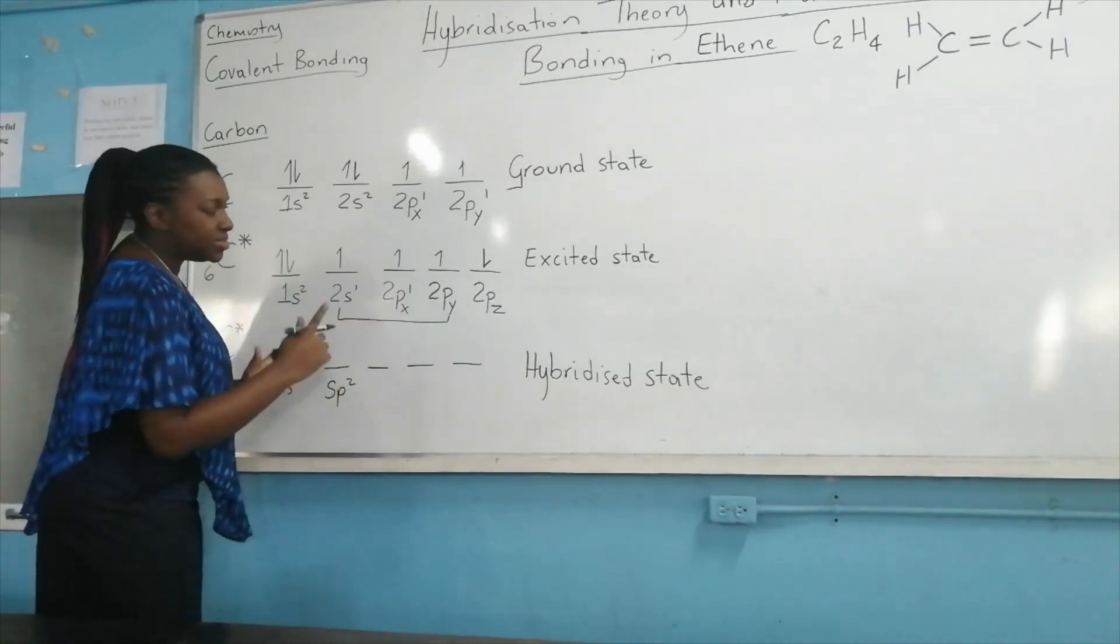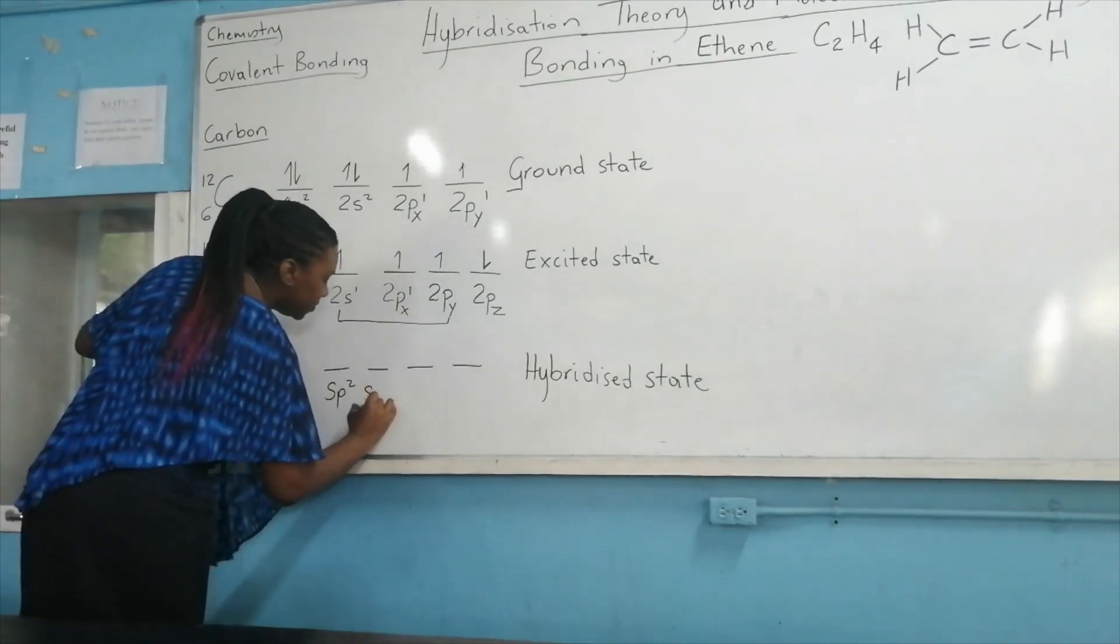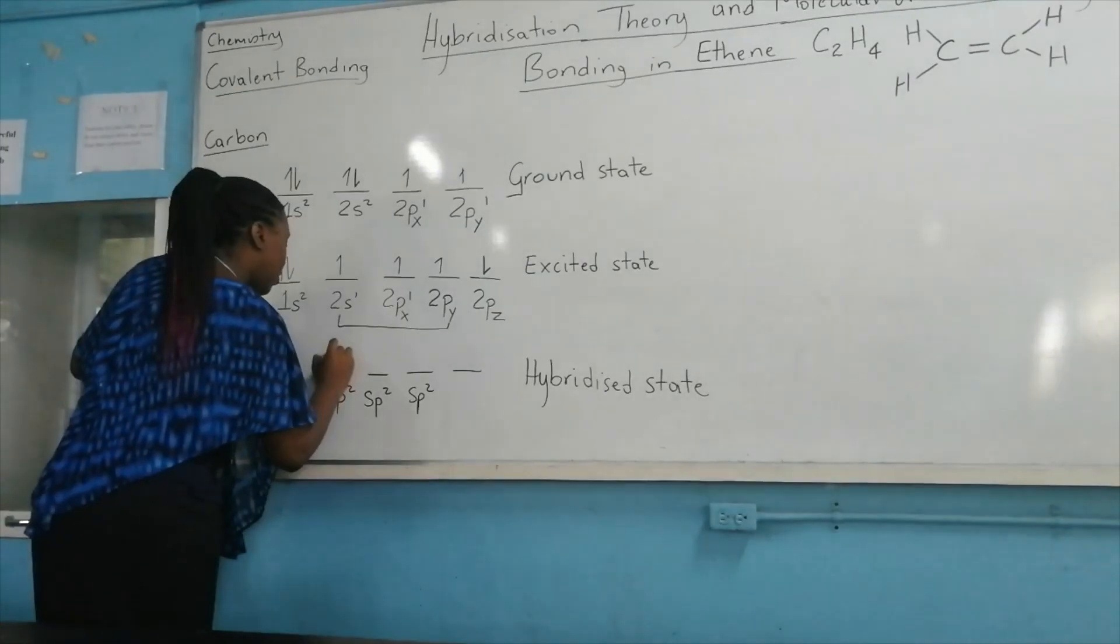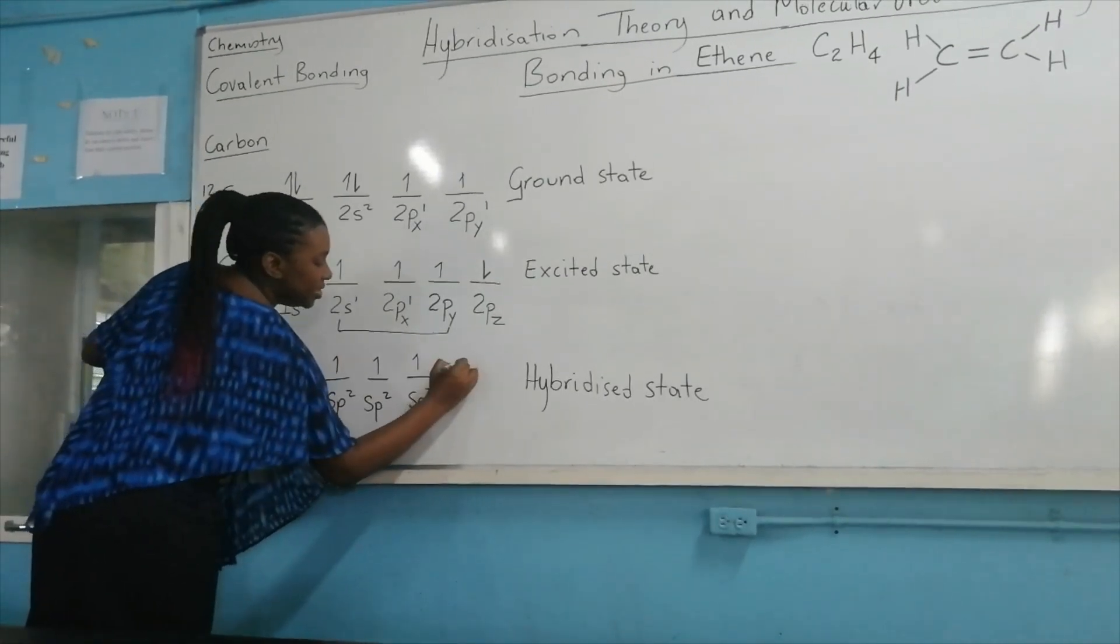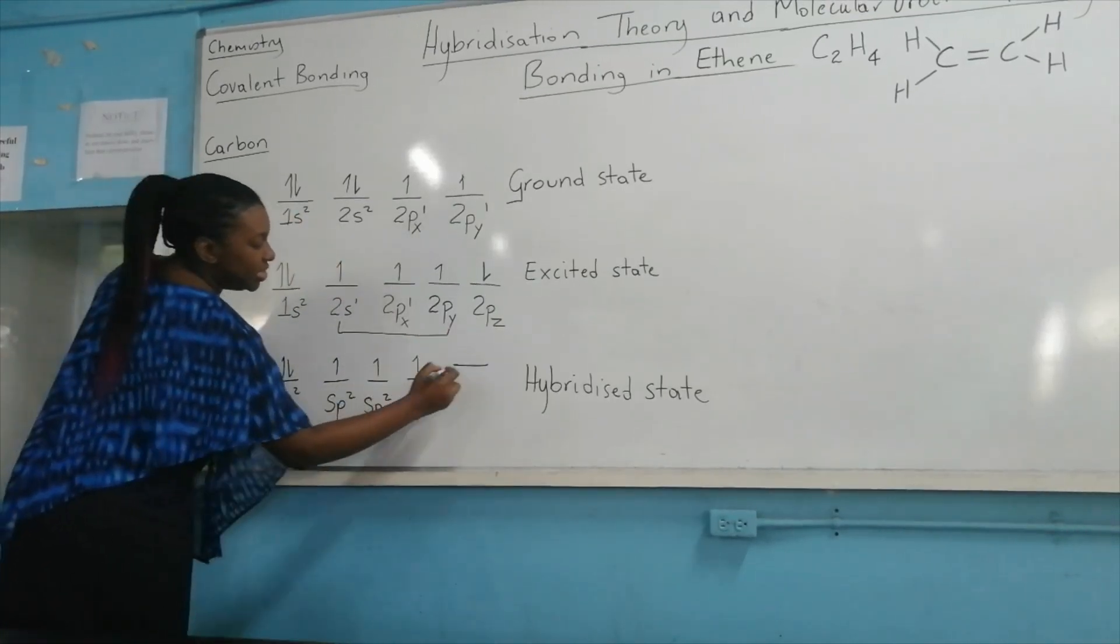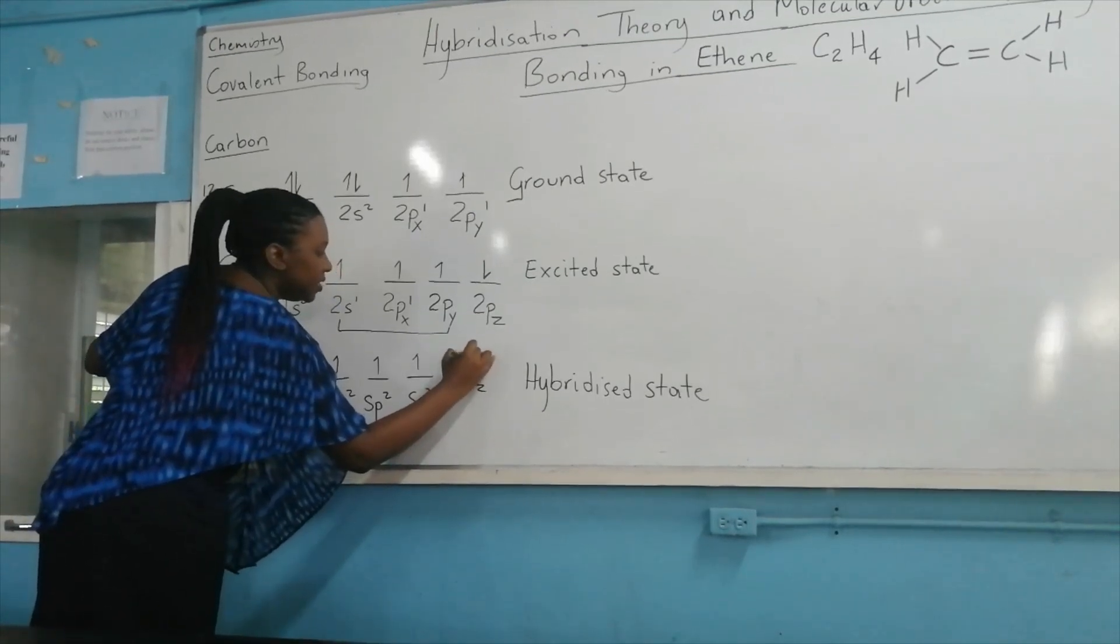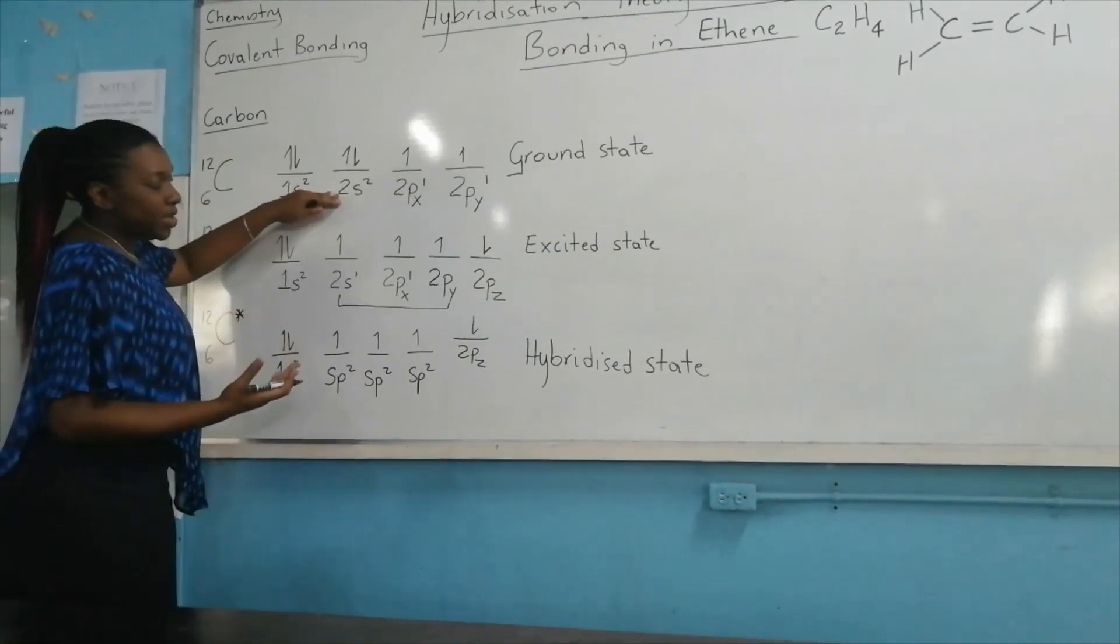So this is sp², sp², sp², and we have one unpaired electron in each of these. And guess what? We have at a slightly higher energy state, the 2pz orbital, still with that one unpaired electron that was promoted from the 2s.